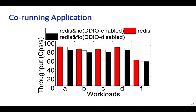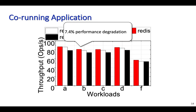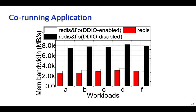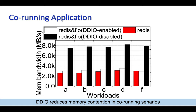To study the effectiveness of DDIO in reducing memory interference between cores running I/O-intensive applications, we run Redis and FIO together and compare Redis performance with an isolated run of Redis. Redis performance decreases by up to 7.4% across different workloads. When DDIO is disabled, memory bandwidth utilization is more than twice as much as when DDIO is enabled. This excessive memory bandwidth utilization of FIO when DDIO is disabled is the reason for the performance degradation in the co-running scenario.